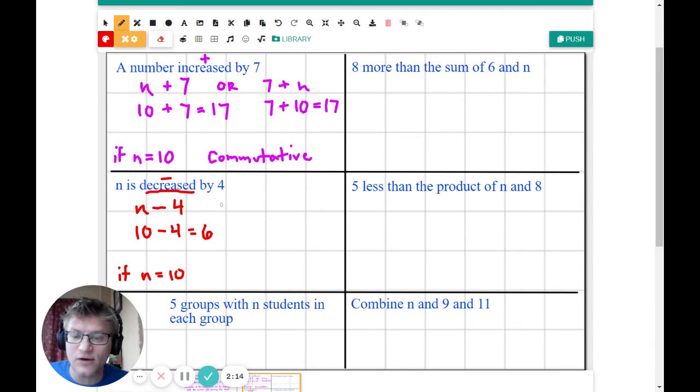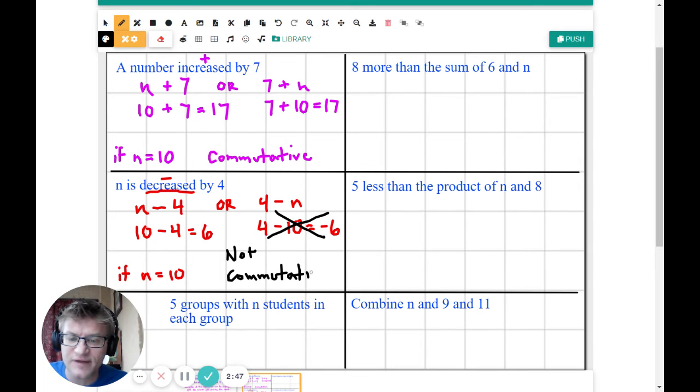Now does it work if we reverse it? Or, let's try it. 4 minus n. Does it work? So 4 minus 10 gives us negative 6. This does not work. So we're going to get a big X over here. This does not work. So we're going to say not commutative. Because we tested it and we know that since it's subtraction, it proves we get a different answer. We got negative 6 and positive 6.